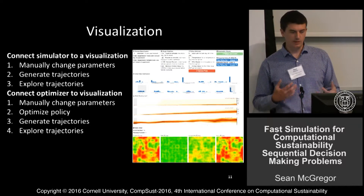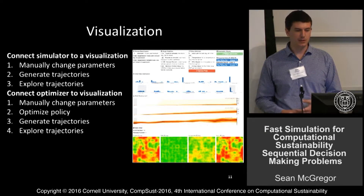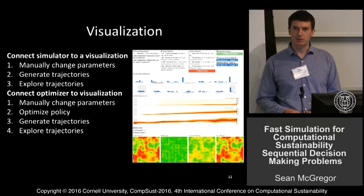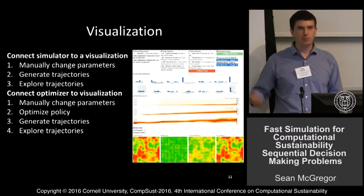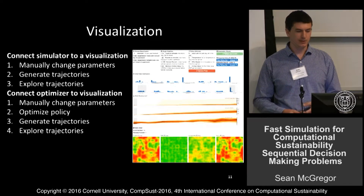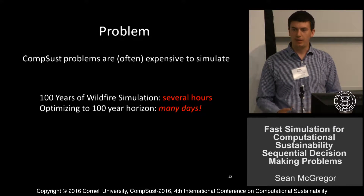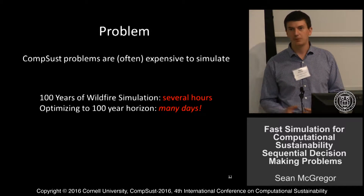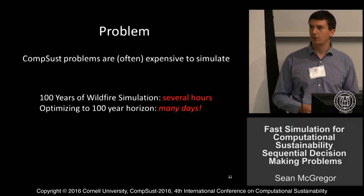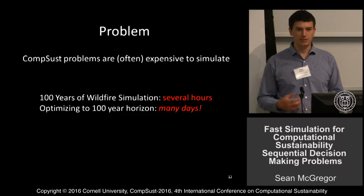If we want to figure out whether our specification of the reward function is affecting our optimized policy, we really want to hook the optimizer into the visualization so we can change reward function parameters or other simulation parameters, optimize the policy, generate trajectories, and explore those trajectories. The problem, as in many computational sustainability problems, is that they are expensive to simulate. Our 100-year wildfire simulation can take several hours to generate a single trajectory, and when optimizing — since we need to view many different policies — that can take many days.